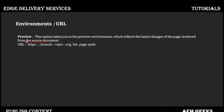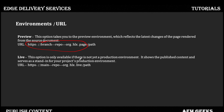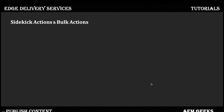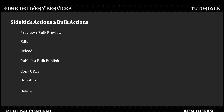When you hit the preview URL it will access your home page, which is the index document. If you want to access other pages you have to define the path including the document name and folder name — we'll see that in detail in another tutorial. The live URL uses dot-live, and once everything is ready on an actual project you map your own domain. Using Sidekick you can perform actions like: preview, bulk preview, edit, reload, publish, bulk publish, copy URL, unpublish, and delete.